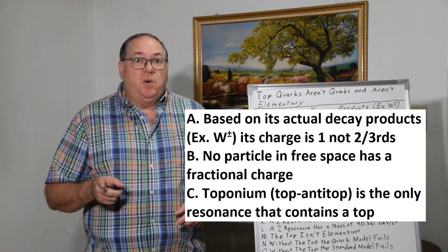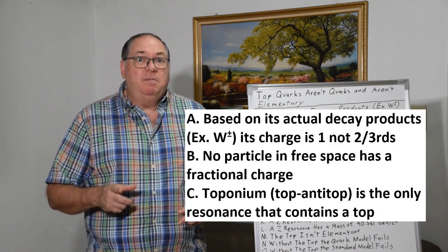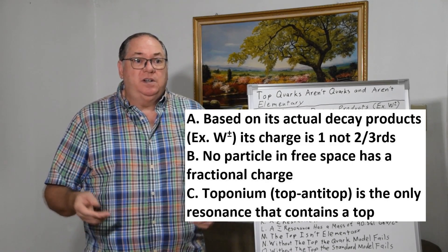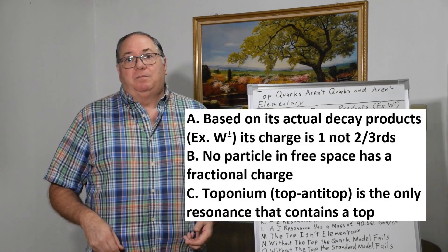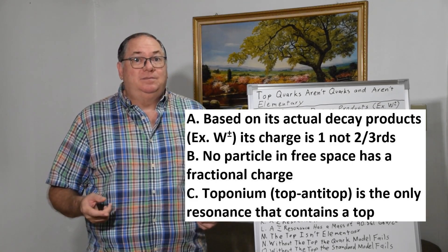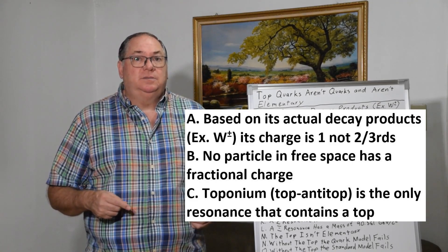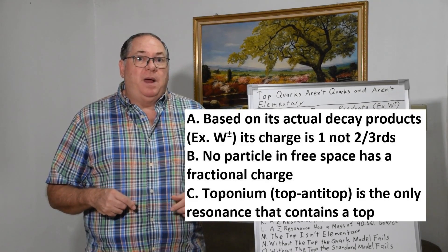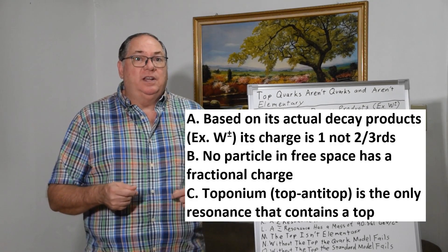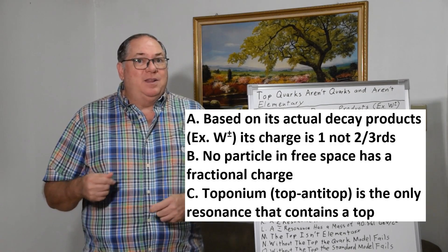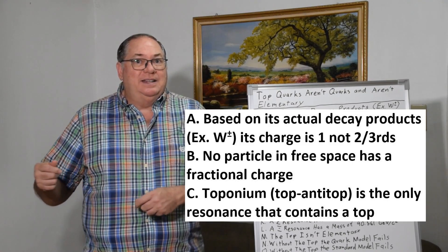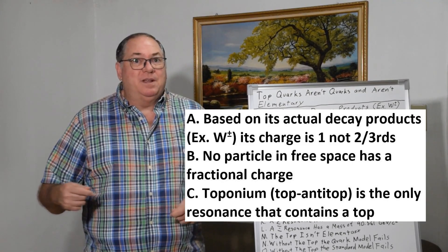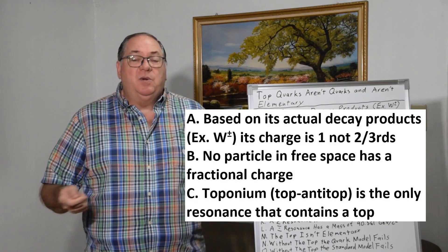So whatever the decay components total net charge works out to be is what the charge is, and that's one, it's not two-thirds. They only get two-thirds by assuming that the quark theory is right. They apply the quark theory and then they say oh it's two-thirds because we applied the quark theory, not because they measured it, so it's circular logic.